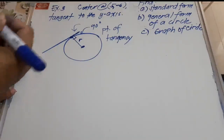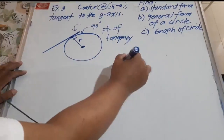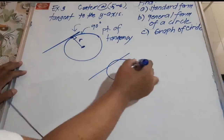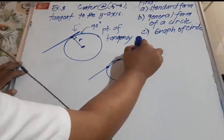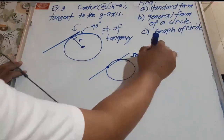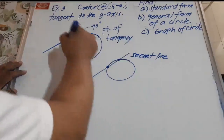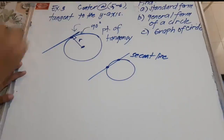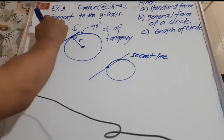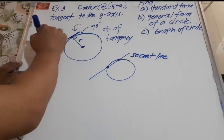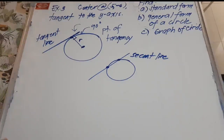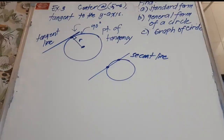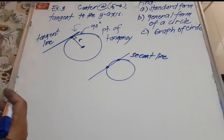When we say secant, our circle — or the line — intersects the circle at two points. That is called a secant line. So we have two conditions given: the center, and the circle is tangent to the y-axis.